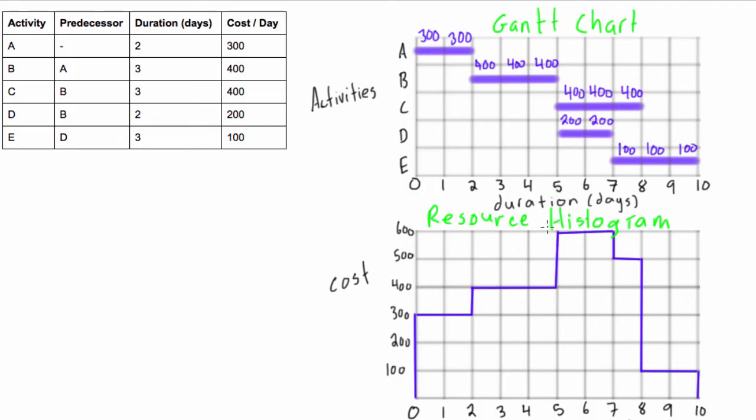So there we go, Gantt chart, resource histogram. You can show someone either of these. Maybe if you wanted to show someone, hey look, this is our cost per day. Pretty simple, people can see, okay yeah, this day is going to cost more than maybe this day down here.